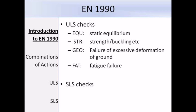The four ULS checks are: checks for static equilibrium, strength and buckling, failure or excessive deformation of ground, and fatigue failure. We also need to consider serviceability limit states — those relating to the appearance and functioning of the structure.